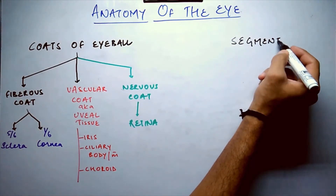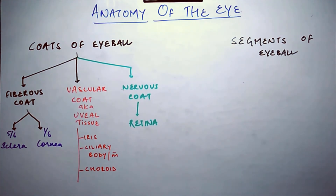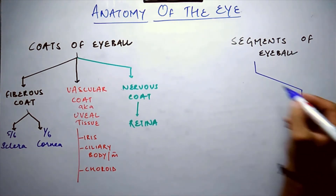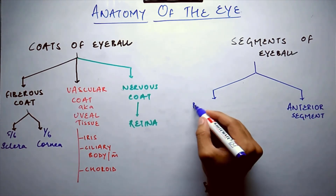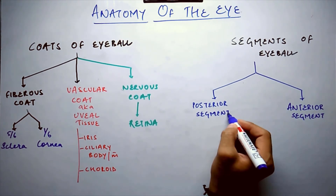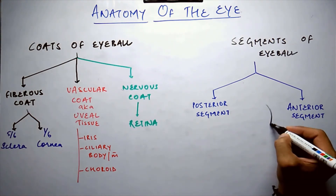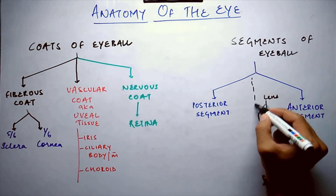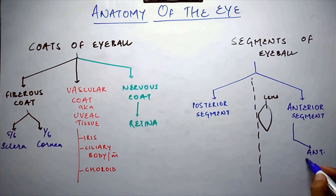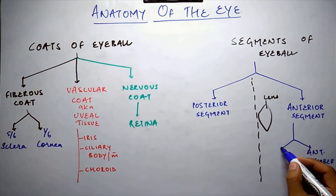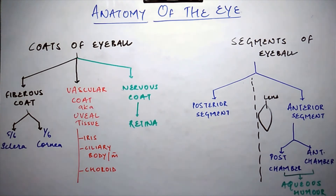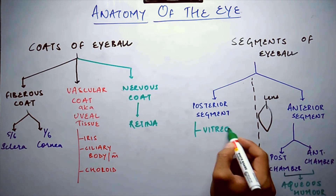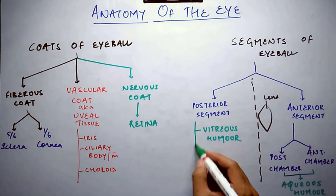Another classification is on the basis of the segments of the eyeball. There are two segments: the anterior segment and the posterior segment. The demarcated line is drawn from behind the lens, so the lens is included in the anterior segment. The anterior segment is further divided into the anterior chamber and the posterior chamber, both filled by the aqueous humour. The posterior segment consists of the vitreous humour, the jelly-like fluid, and the sensory retina.